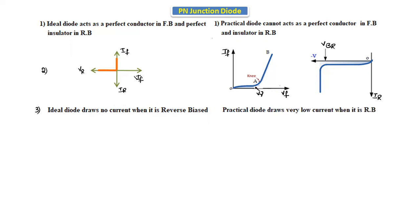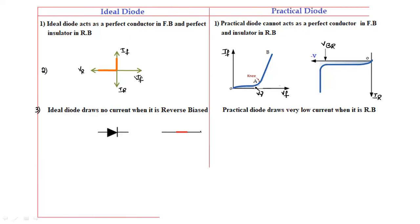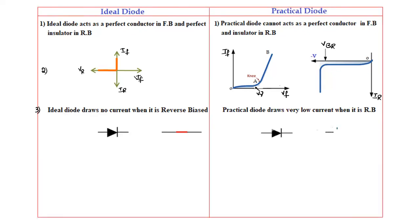In the practical diode, a very low current flows when it is in reverse bias. In the ideal diode it is approximately zero, but in the practical diode there is a small current. When the diode is an ideal diode, it is replaced with a closed switch in forward bias. If it is a practical diode, it is replaced with the cut-in voltage connected in series with the forward resistance.